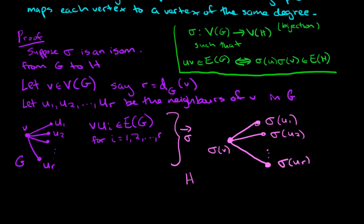So first of all, what does this tell us? What this tells us is that the degree in the graph H of the vertex sigma V—remember that's just a vertex—its degree is at least R, because it has these R neighbors.